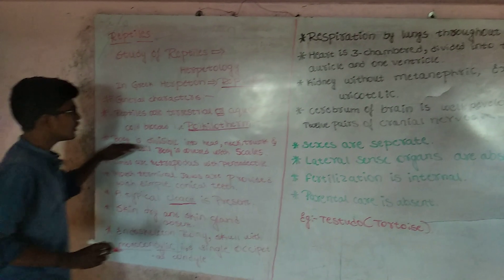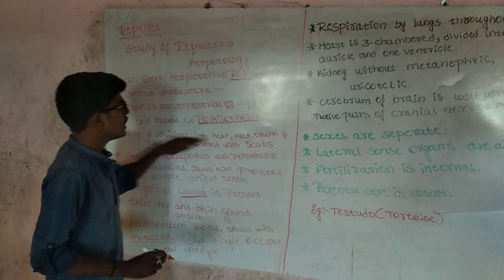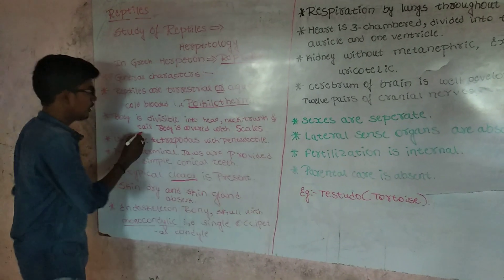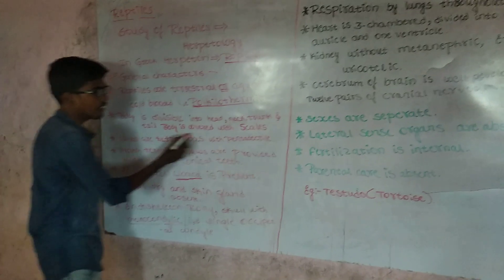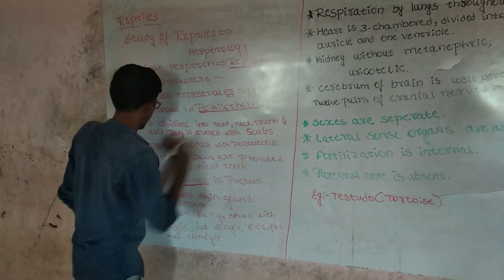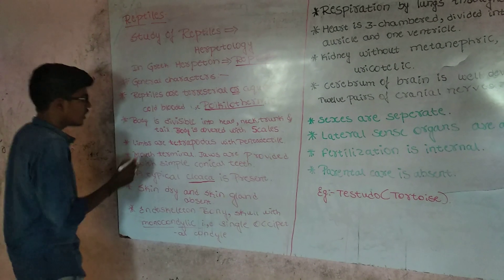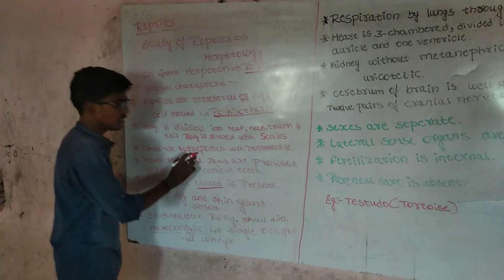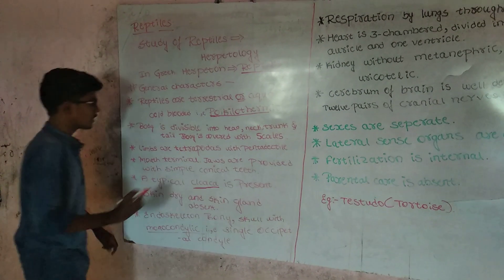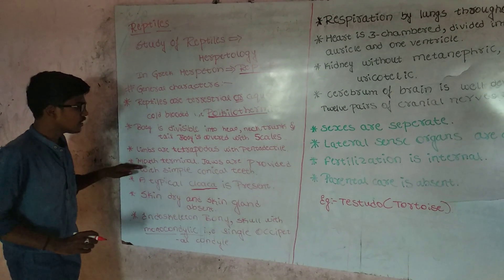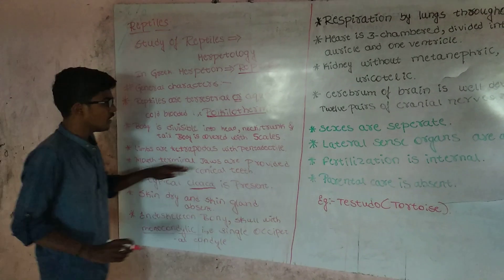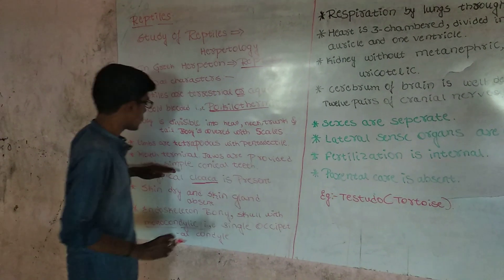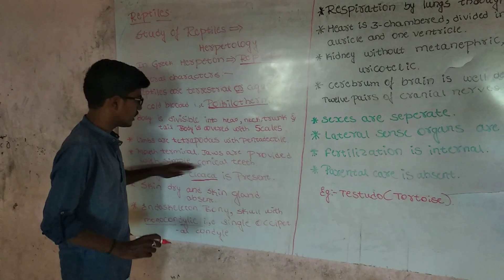Body is divisible into head, neck, trunk, and tail. Body is covered with scales. Limbs are tetrapod with pentadactyles. Mouth terminal jaws are provided with simple conical teeth.